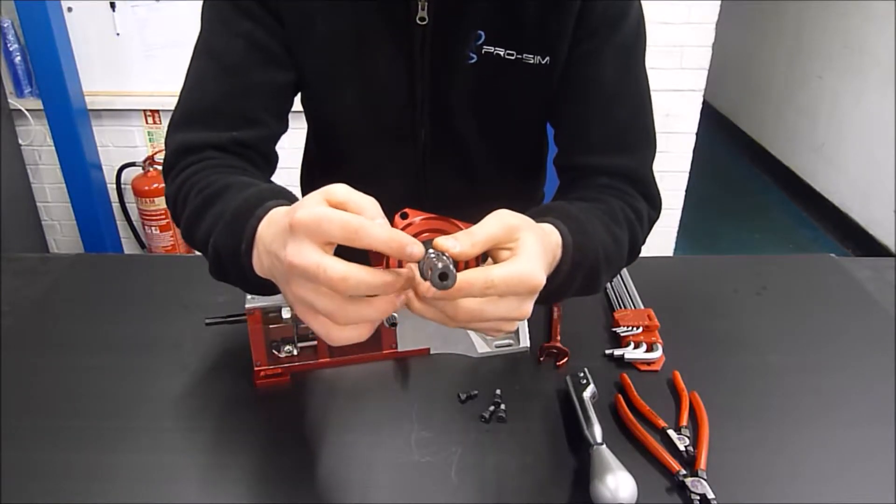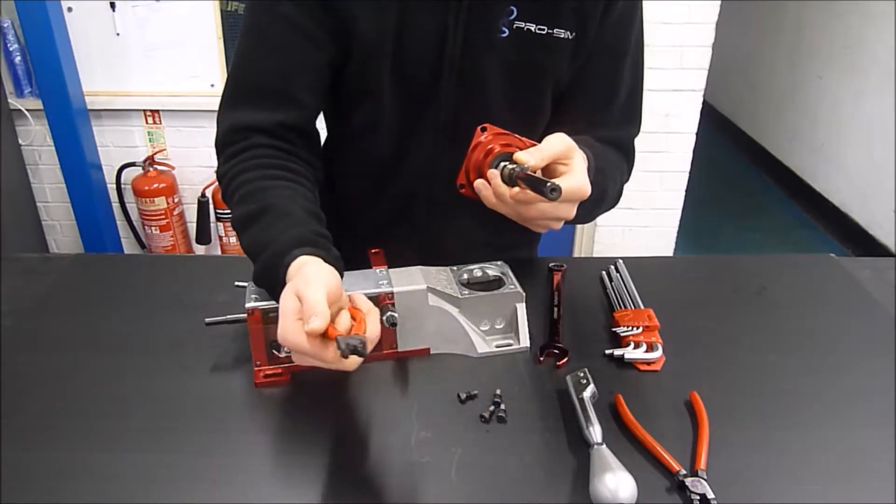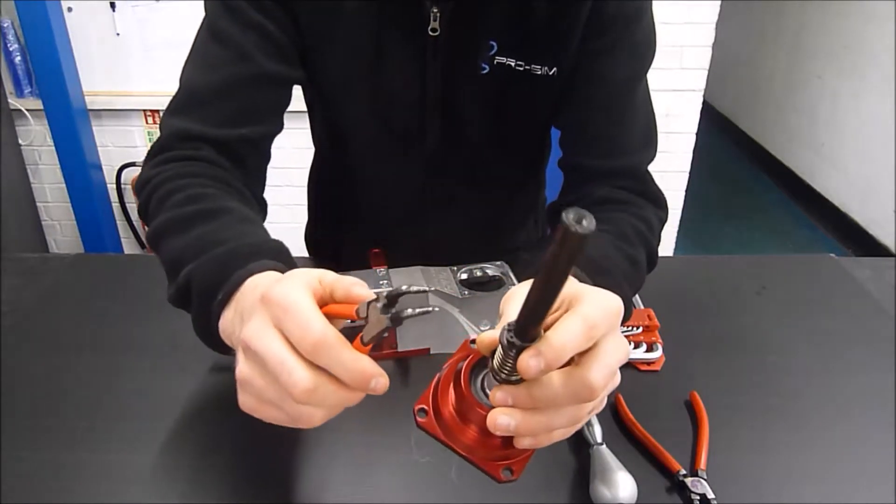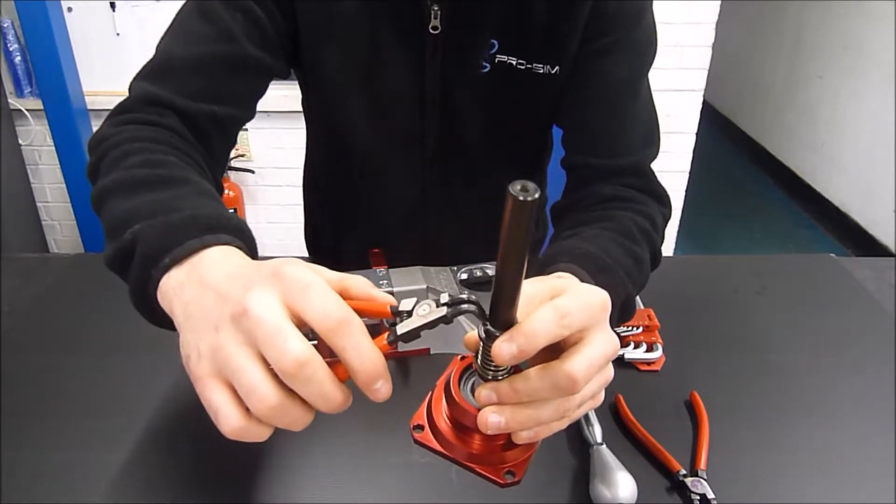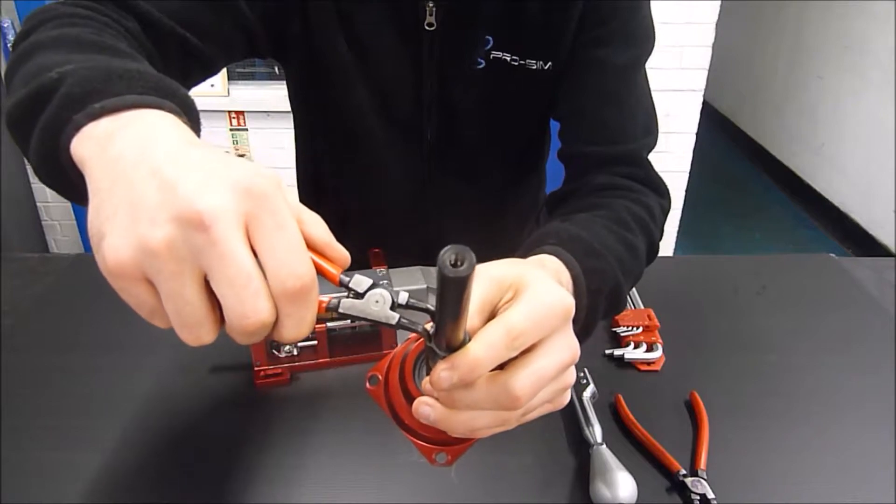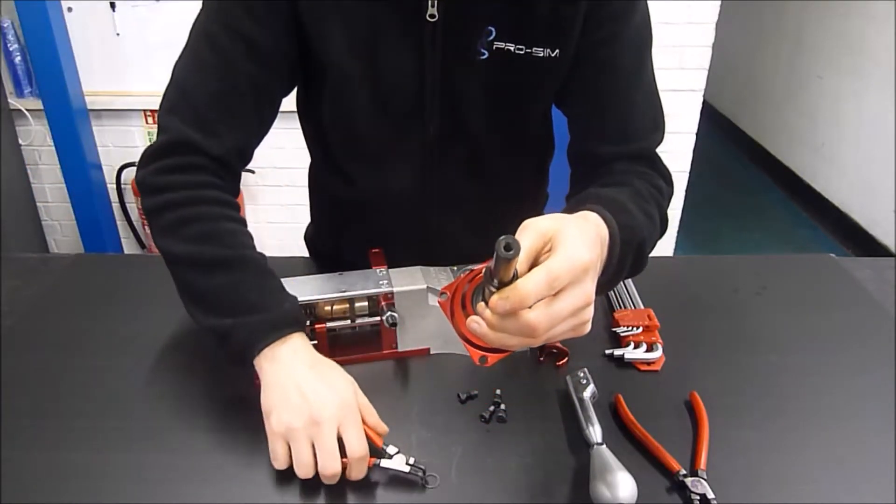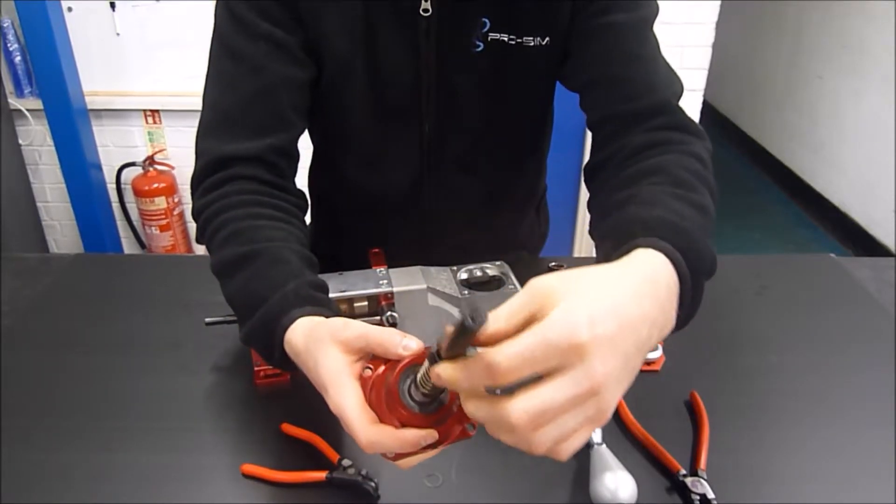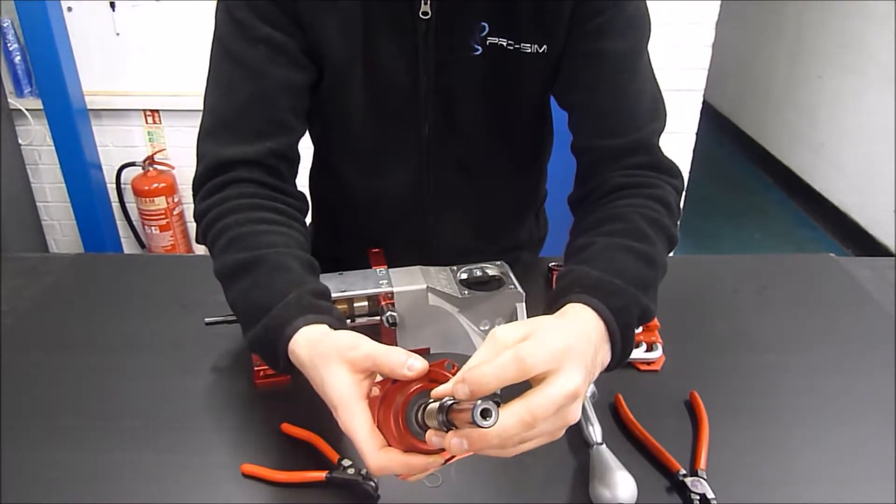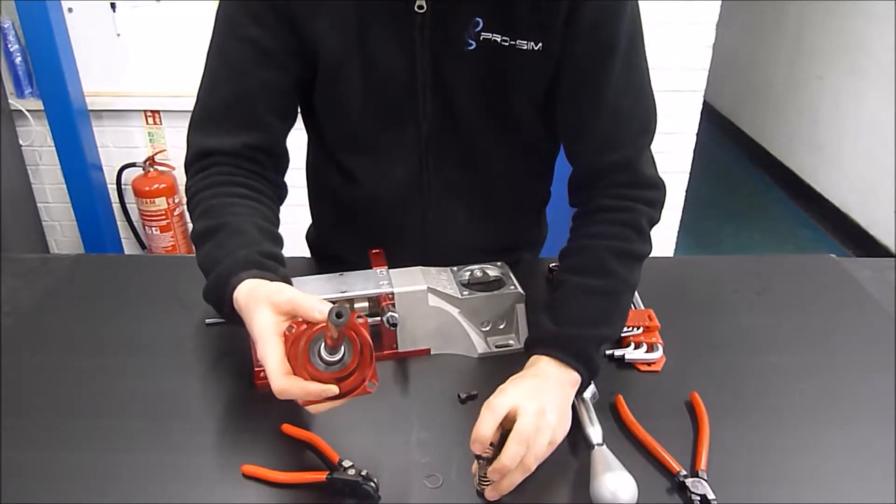And then on here you'll see there's a circlip here, so what we need are a small set of circlip pliers. So we take this off, squeeze that, lift the circlip off, put that to one side, then we can take the spring and the two cups off in one, put that to one side.